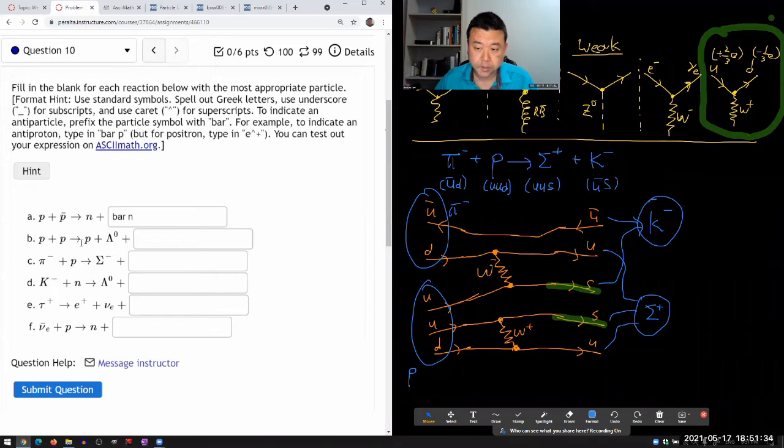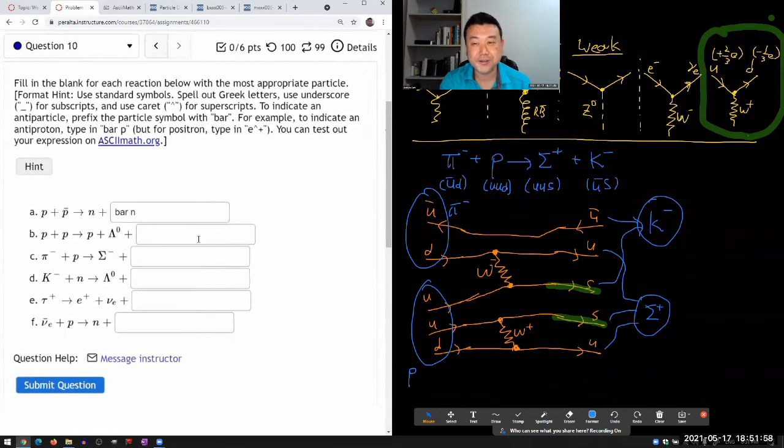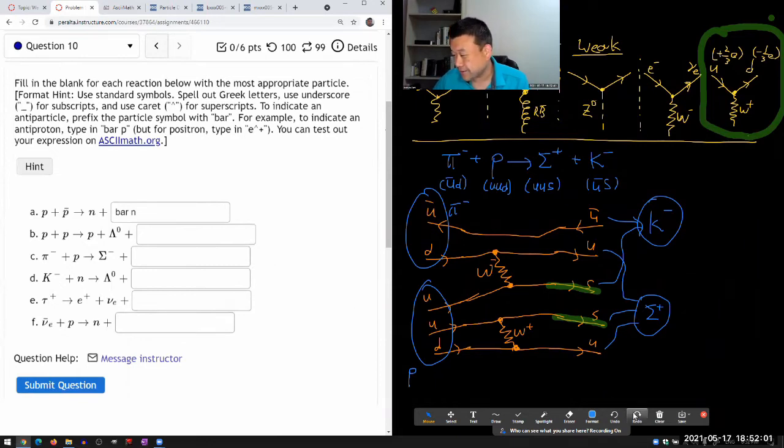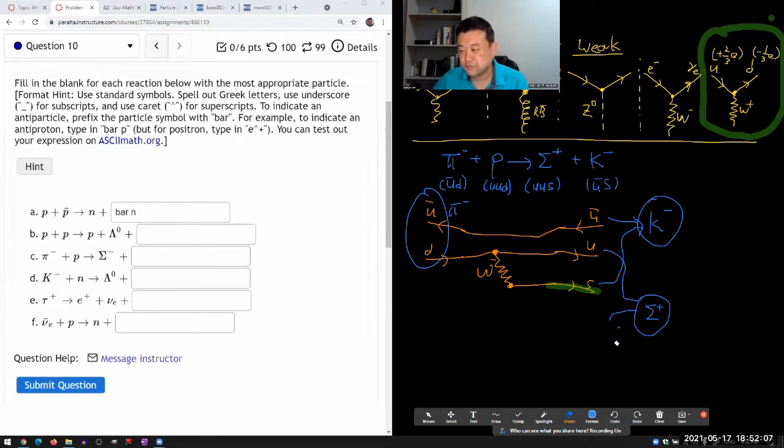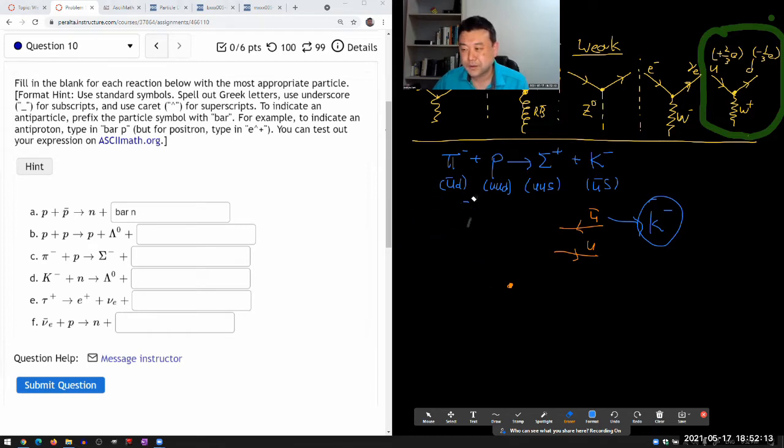A proton and proton going into proton plus... I have two baryons coming in so far. This is where drawing Feynman diagram helps. You know, let me do that. I'm going to change the plan. And for this question, let me draw Feynman diagrams because this is actually a question where Feynman diagrams help you get the right answers.